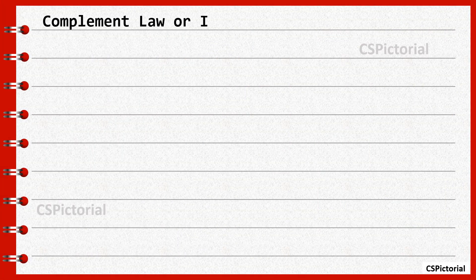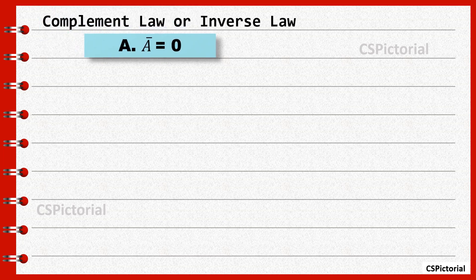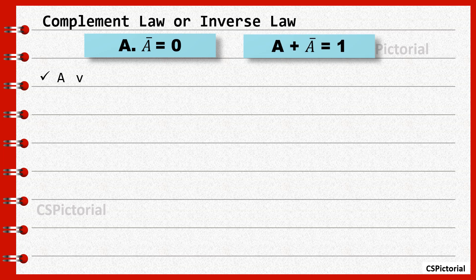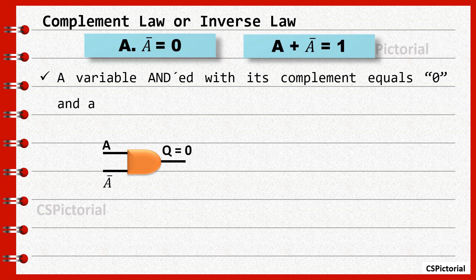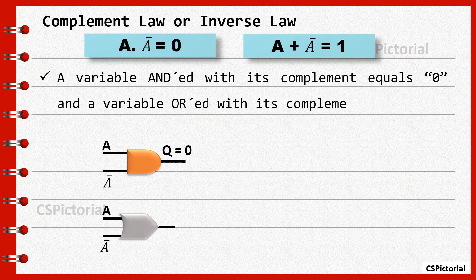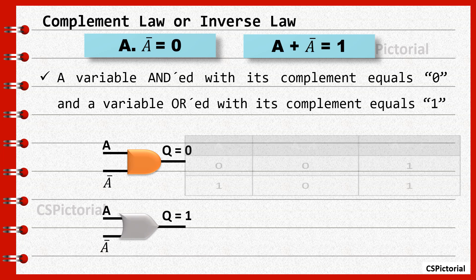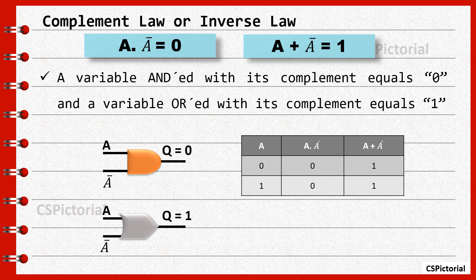Complement law or inverse law. A dot A-bar equals 0 and A plus A-bar equals 1. A variable ANDed with its complement equals 0 and a variable ORed with its complement equals 1. As the output of AND gate is 1 if and only if all its inputs are 1, the AND operation of a variable with its complement always equals 0.